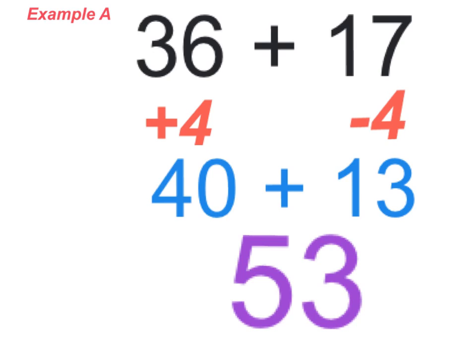If you ask a kid what was 36 plus 17, you'll start to see the wheels start to spin. You'll see them pull out the fingers. They'll start adding things up. What compensation allows us to do, as you can see from this example here, A,